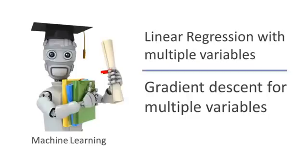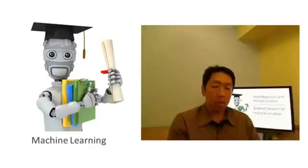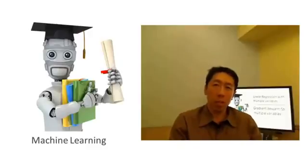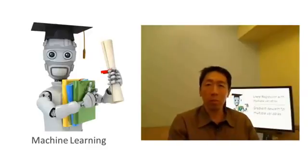In the previous video, we talked about the form of the hypothesis for linear regression with multiple features, with multiple variables. In this video, let's talk about how to fit the parameters of that hypothesis. In particular, let's talk about how to use gradient descent for linear regression with multiple features.